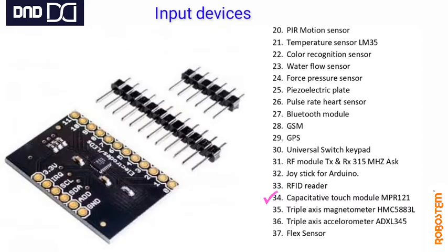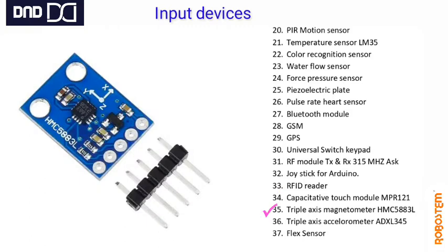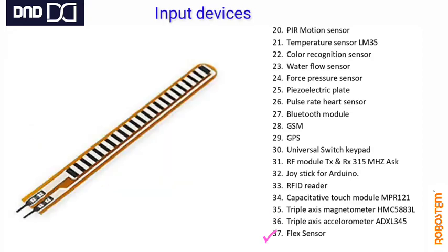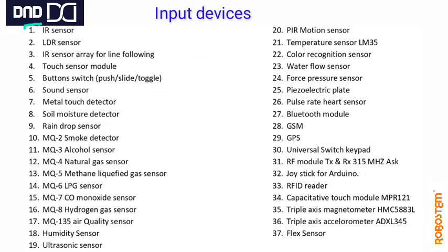Capacitive touch module detects touch capacitively. Triple axis magnetometer and triple axis accelerometer are available. Flex sensor works as a resistor that changes with bending. All these are input devices.